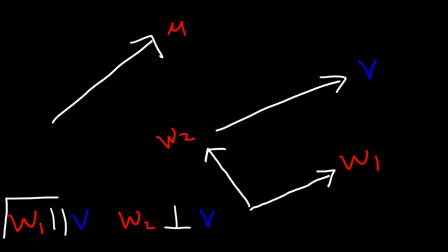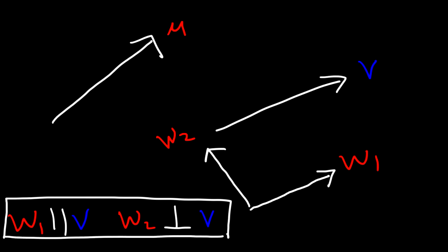Now these two components are not necessarily along the x or y axis. They're simply parallel and perpendicular to another vector. The question is how do we find these two components?